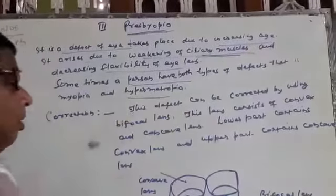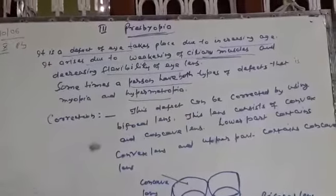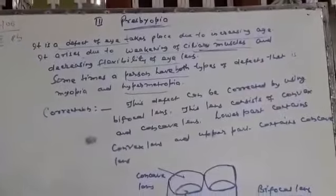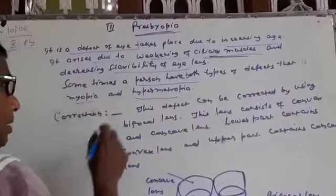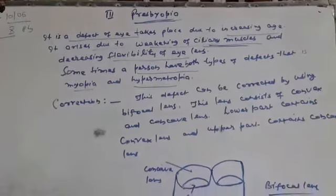As well as, he is also unable to see distant objects clearly. This means the person has both types of defect: myopia and hypermetropia.